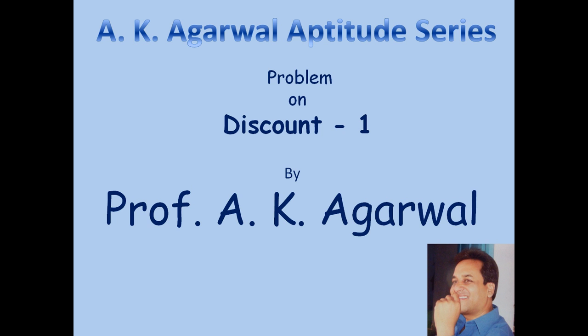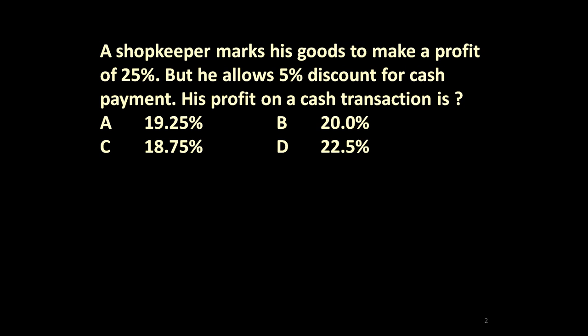Hello friends, and welcome to AK Agrawal Aptitude Series. In this session we are going to learn a technique for solving a problem on discount. The given problem is: a shopkeeper marks his goods to make a profit of 25%, but he allows 5% discount for cash payment. His profit on a cash transaction is — what?